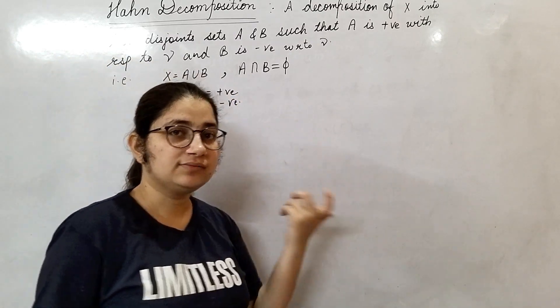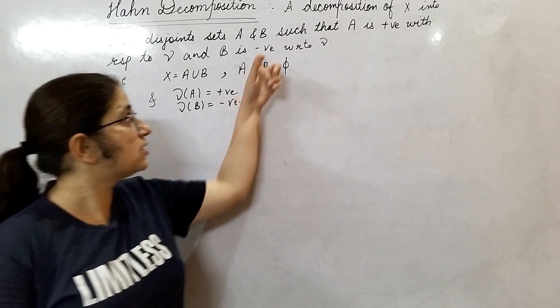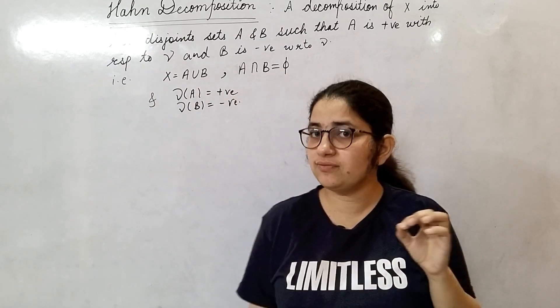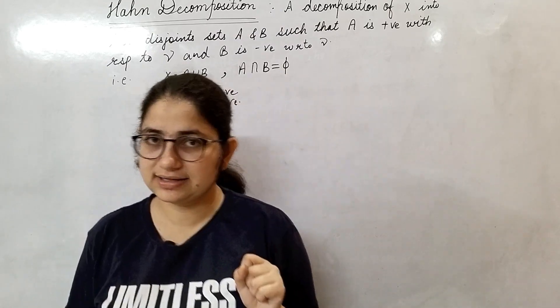In that theorem, we will show existence of these two sets A and B such that X can be written as union of A and B.